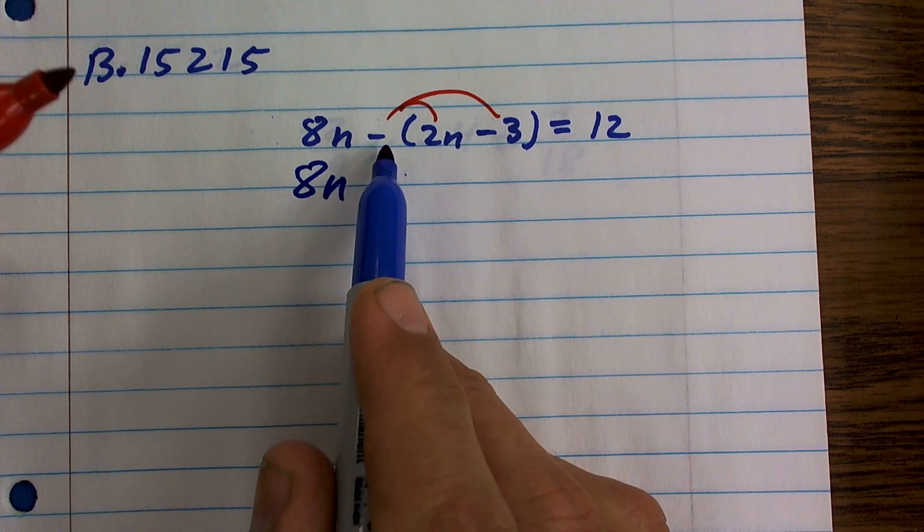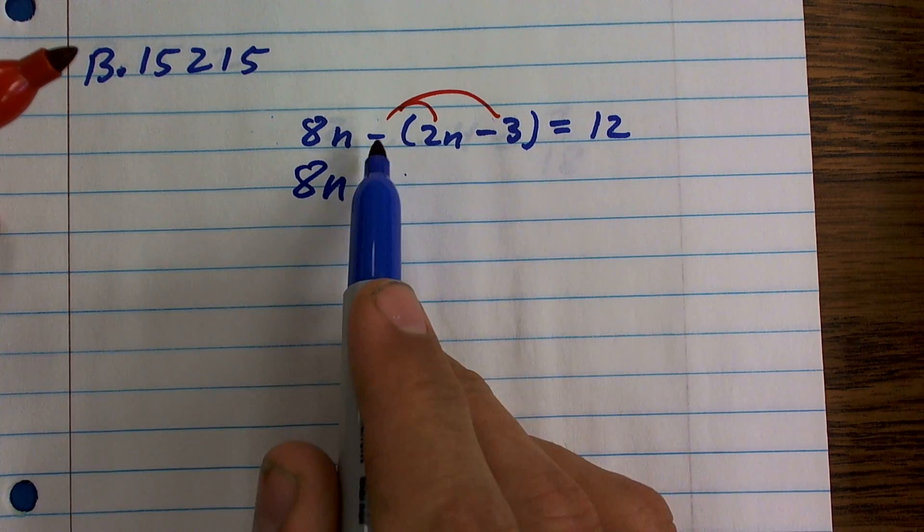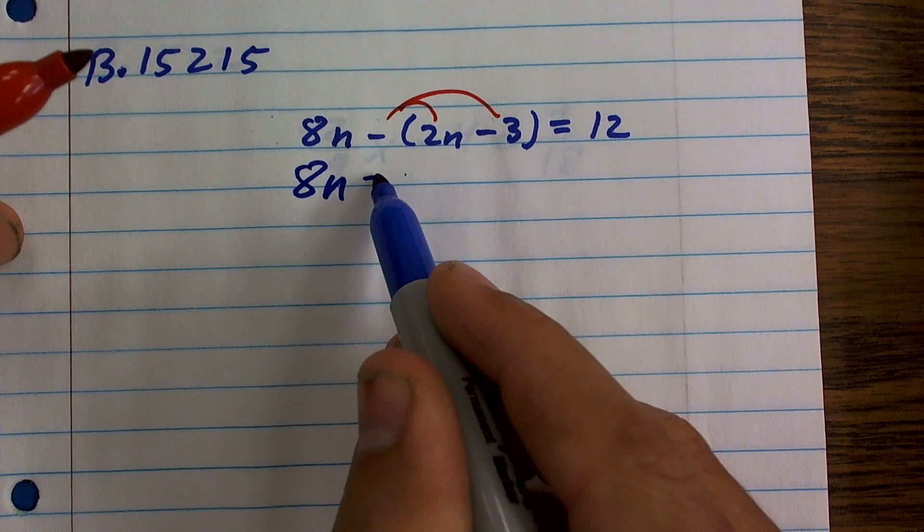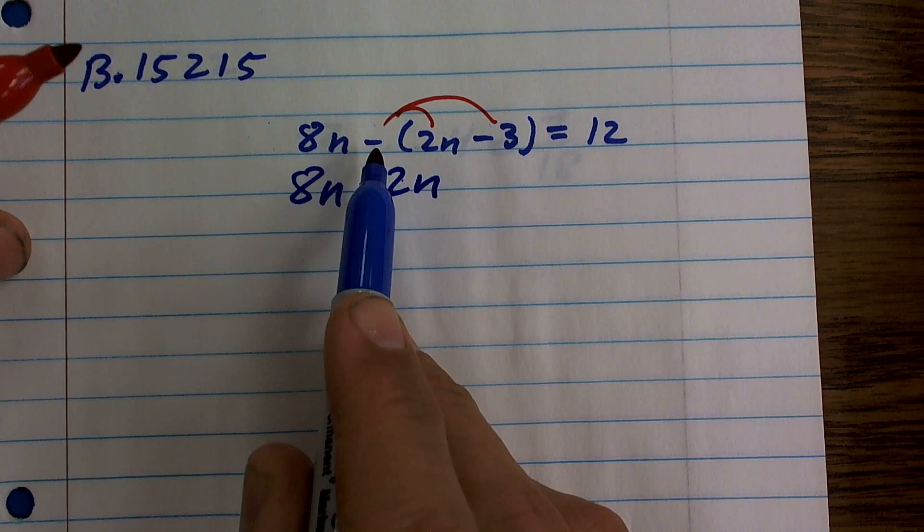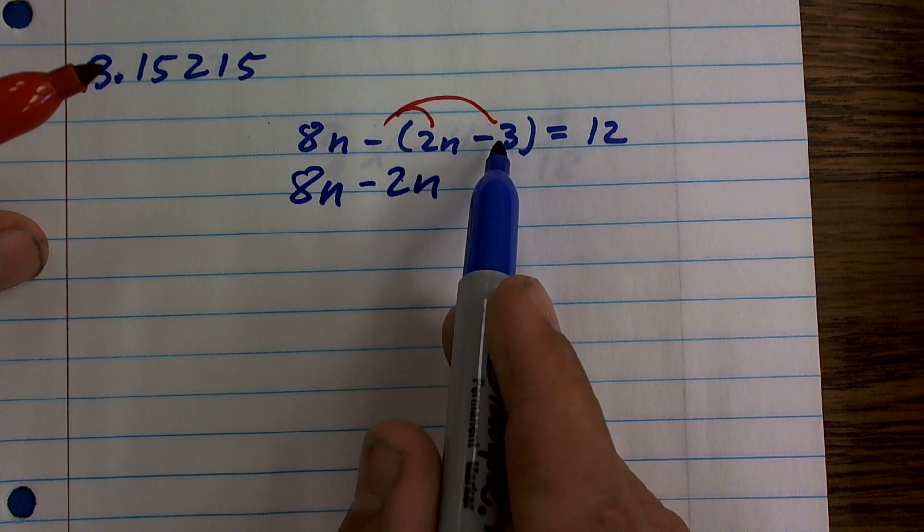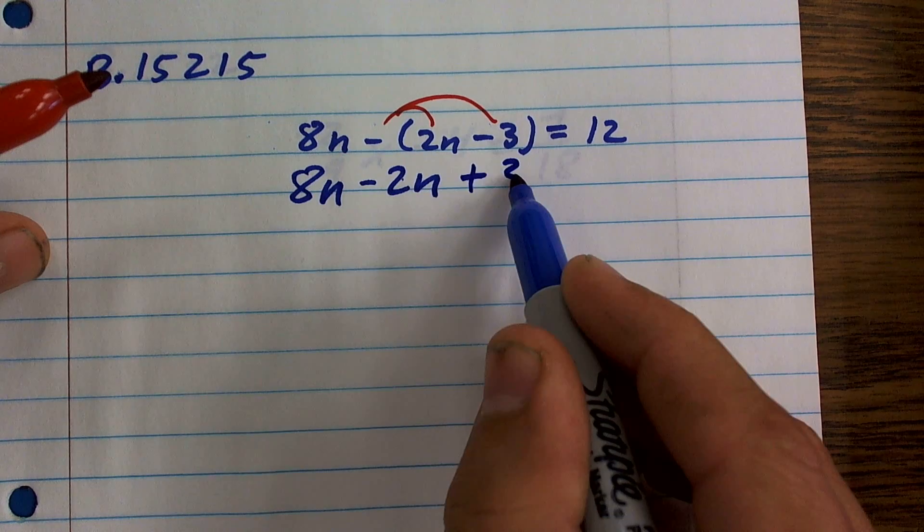So 8n, we have negative times 2n, or a negative 1 times 2n, which is negative 2n. And then a negative 1 times negative 3, which would be a positive 3.